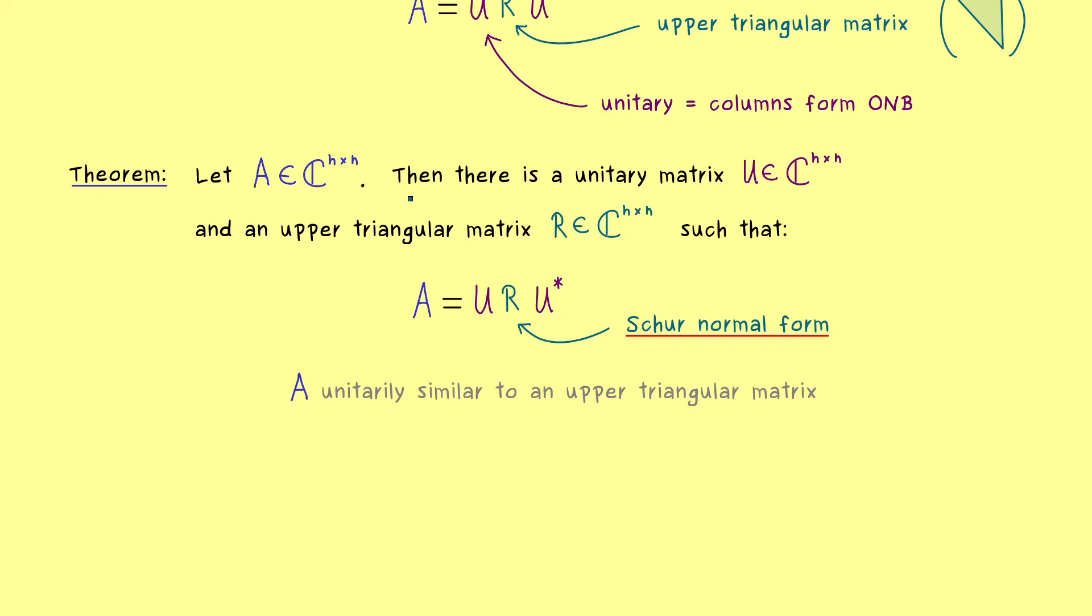And as a remark, the whole thing also works just with real numbers, if all the eigenvalues of the matrix A are also real numbers. And in that case also U and R can also be chosen as matrices over the real numbers. And moreover, since we have the similar relation, we also know that the eigenvalues of A and R are exactly the same. So the conclusion is that all the eigenvalues of A are found on the diagonal of R. This is a common thing with a triangular matrix. The eigenvalues are always on the diagonal.